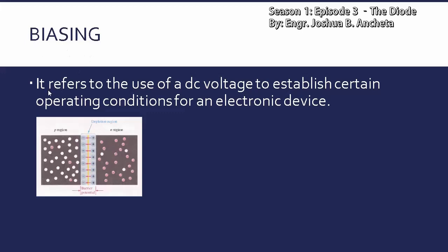Para magkaroon ng additional energy itong mga electrons para makatawid across the barrier potential or across the depletion region, kailangan natin ang tinatawag na biasing. Biasing — it refers to the use of a DC voltage to establish certain operating conditions for an electronic device.